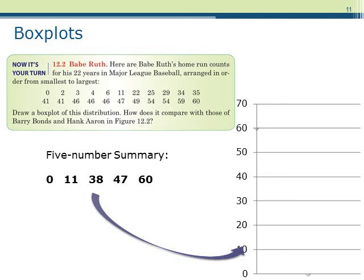To construct the box plot, we will first mark where the minimum and maximum are. Next, we will mark where the quartiles are. Then draw a box that spans the quartiles, and draw a line on either side that extends to the maximum and minimum. Finally, draw a line in the box to indicate where the median is.